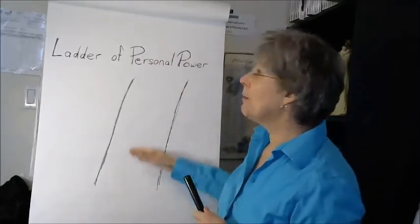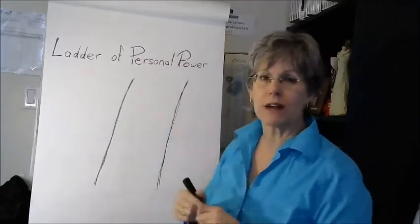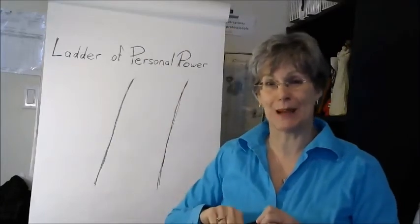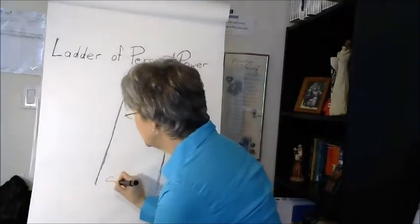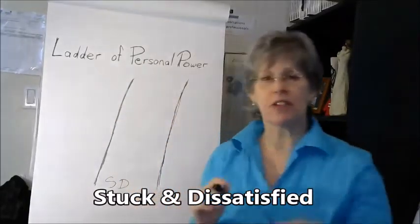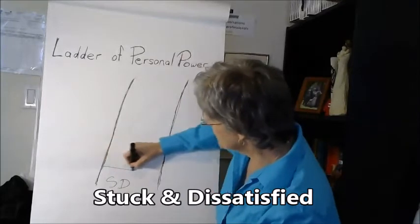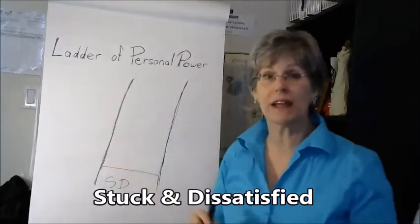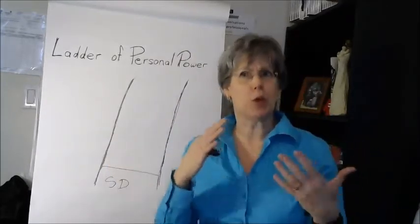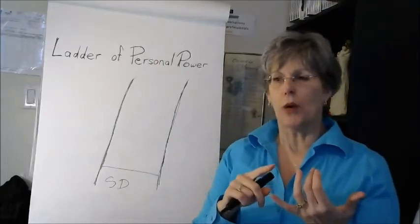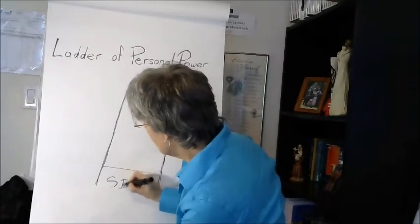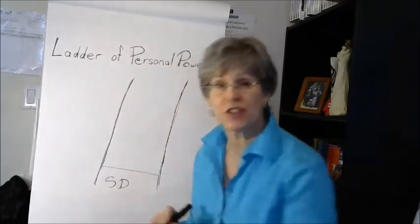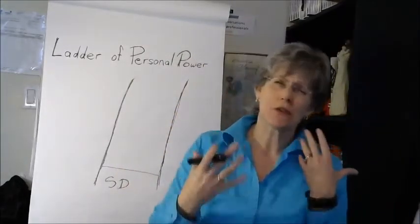So if we were going to go up a ladder with all the different rungs, we all sort of start out at the same place on the bottom of the ladder, which is where we are stuck and dissatisfied with things that are going on in our lives. We know that we're there when we recognize people who are there as well.